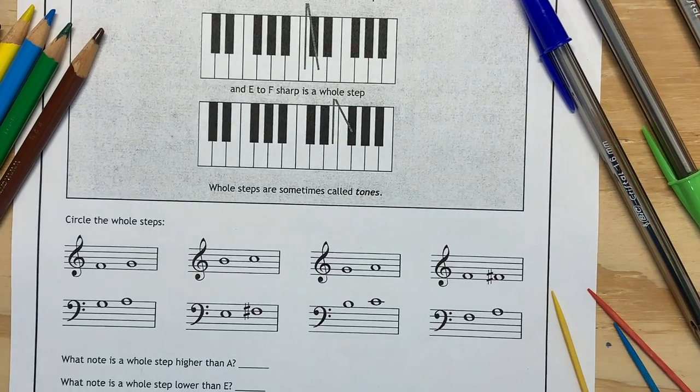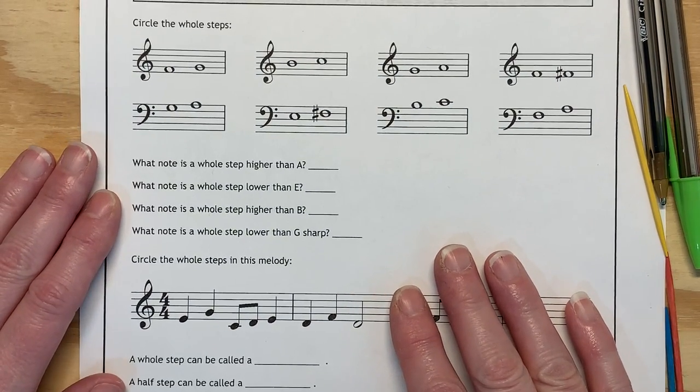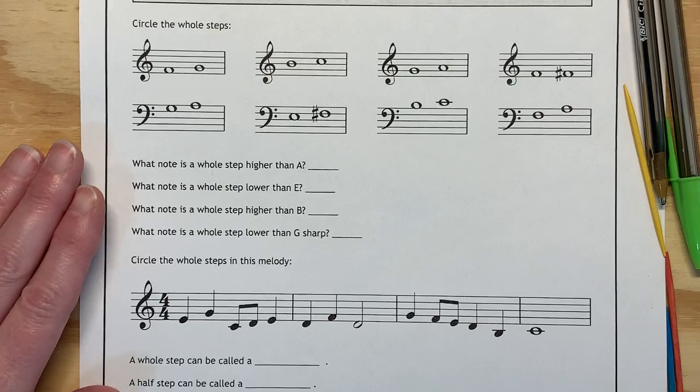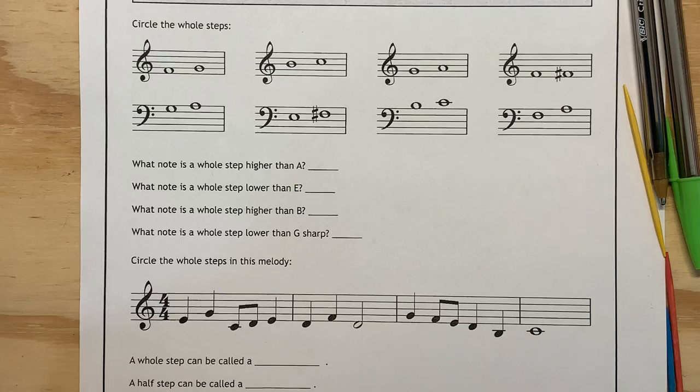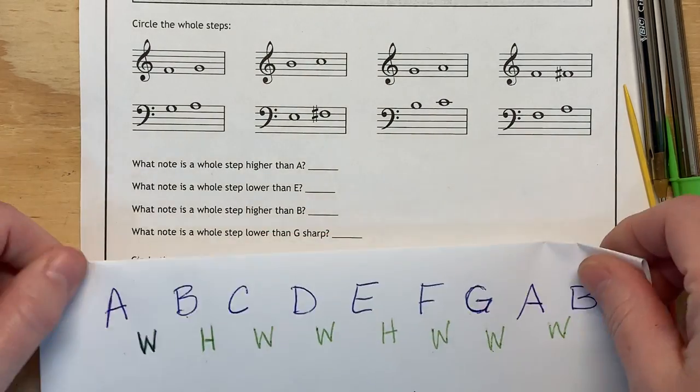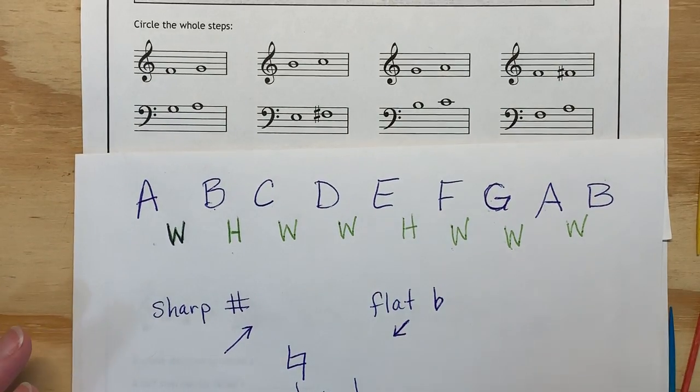So if we zoom in here a little bit and we talk about our notes on the staff, we're going to circle the whole steps. Don't forget, you can use the musical alphabet and bring it in as a resource so that you can see where the halves and wholes are. If you need help actually naming notes, this is not the video for you. You should be able to name notes pretty easily to be able to do this challenging part of it.